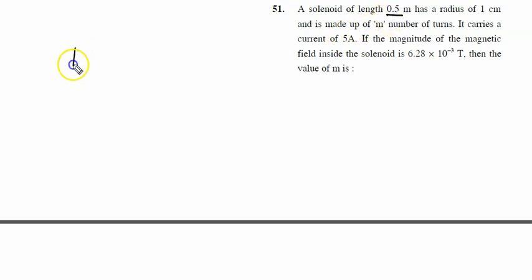A solenoid of length 0.5 meter, which is 1 by 2 meter, has a radius of 1 centimeter, which is 10 raised to power minus 2 meter, and is made up of m number of turns.